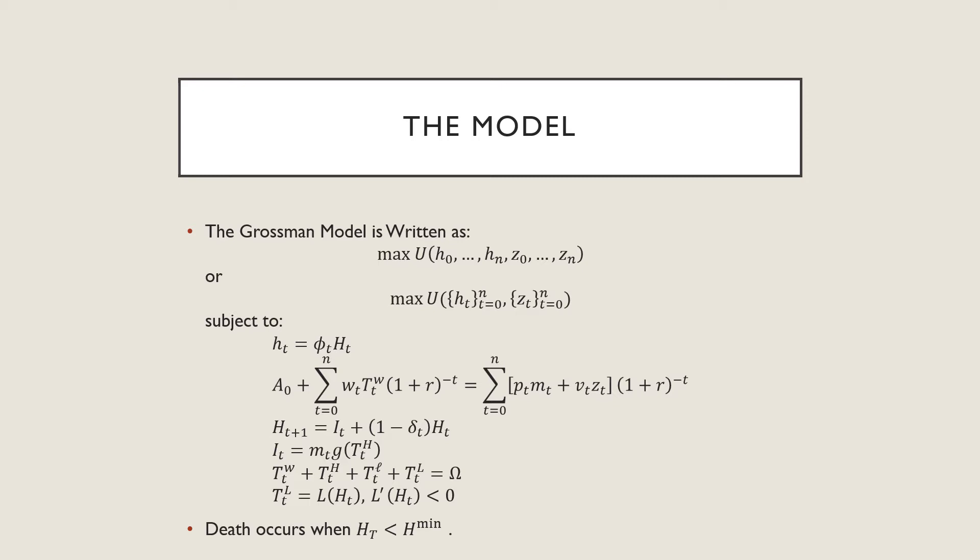Formally speaking, the Grossman model is written as maximizing some lifetime utility function subject to all these constraints. Let's take a second to discuss what they are. The inputs in our utility functions are these health states here denoted by lowercase h at a particular time t, and the consumption of all other goods and services which is denoted by z at time t. We're going to maximize it subject to all these different things here. This is effectively how we transform our health state - we take in health capital, which is our capital H, and we have this transformation parameter phi at time t.